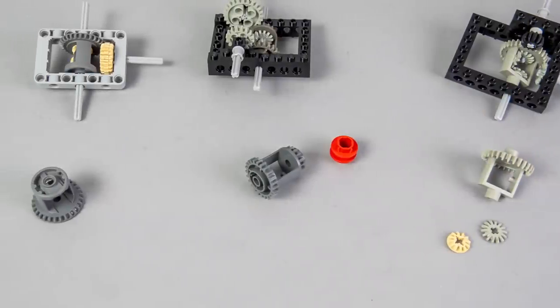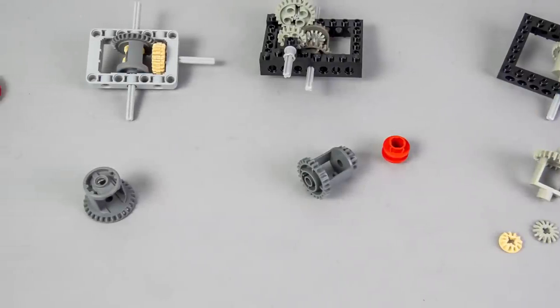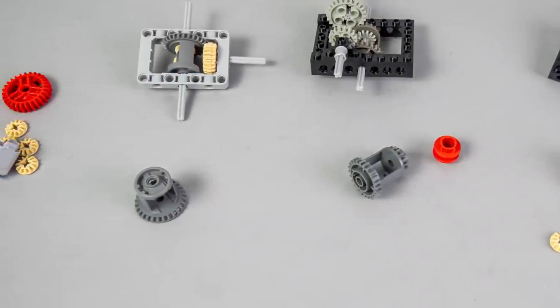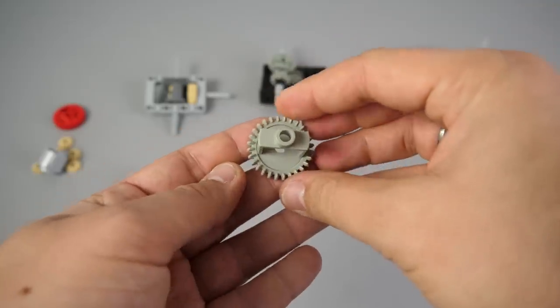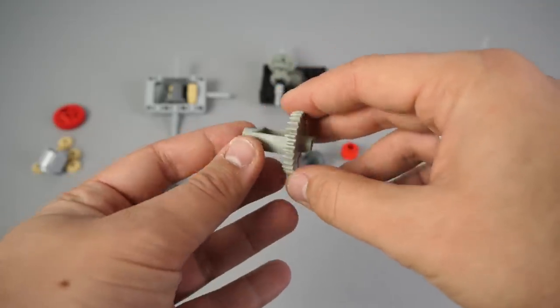Before going into the details, let's start with a little history lesson. There were three previous generations of differentials for LEGO Technic. The oldest one was also a 28-tooth differential gear, but it had a very different look.